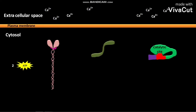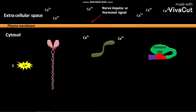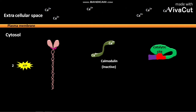Whenever a nerve impulse or hormonal signal reaches a cell, an influx of calcium ions into the cell is triggered. The cytosol of the cell contains calmodulin in its inactive state. When present at a sufficiently high concentration, calcium ions bind to calmodulin, and as a result, an active calcium-calmodulin complex is formed.